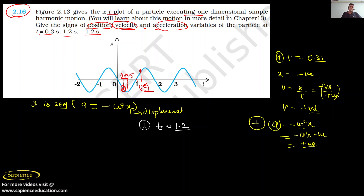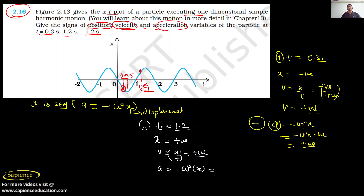At t = 1.2 seconds, the position is positive. Velocity is x over t — both are positive, so velocity is positive. For acceleration: a = -ω²x. Since x is positive, this gives minus omega squared times positive, so acceleration is negative. In case B, acceleration is negative.